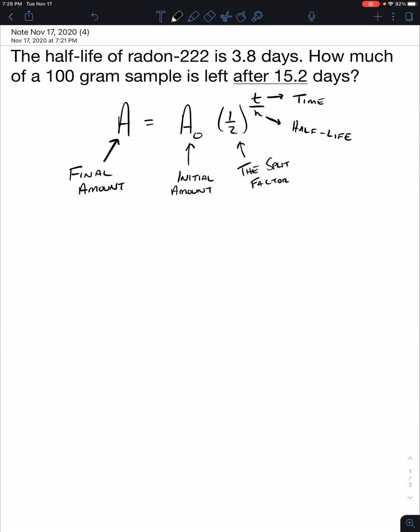Let's plug in our numbers. We're solving for A. A₀ is 100 grams times 1/2. The total time was 15.2 days divided by 3.8 days.